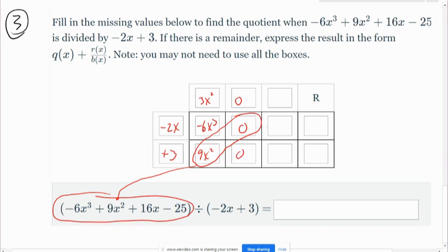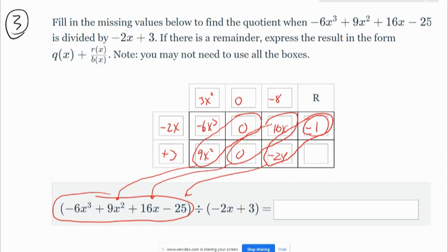And then these have to add up to 16x. So we put 16x there. And then this is going to be negative 8. And so then that is 16x minus 24. And we want these to add up to negative 25. So this is going to have to be a negative 1, and that is our remainder. Notice that there's an extra column on there compared to the previous examples we did. And so our final answer then is 3x squared minus 8, and we have a remainder of negative 1. So I can say plus negative 1 over negative 2x plus 3. So there's our final answer.